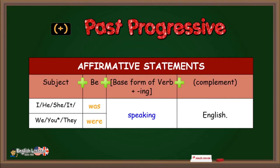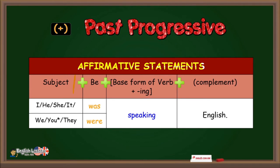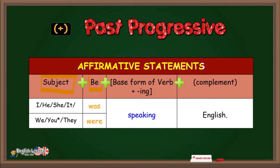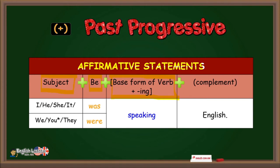Let's continue with past progressive charts. In order to make affirmative statements, you must write first the subject, plus verb to be, plus base form of the verb, plus -ing — I mean, gerund — plus complement, if it is needed.